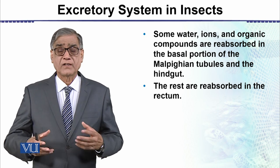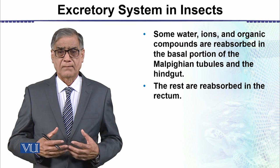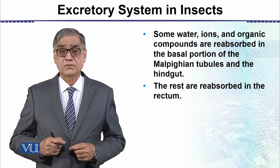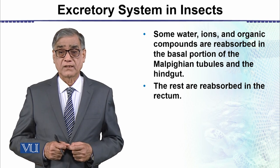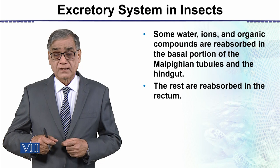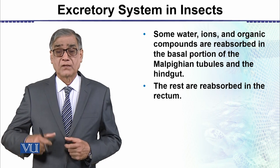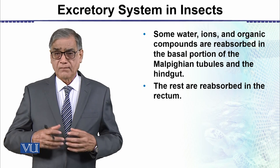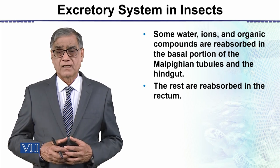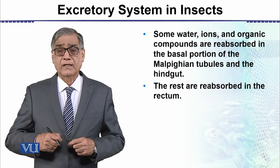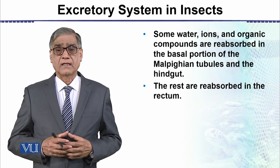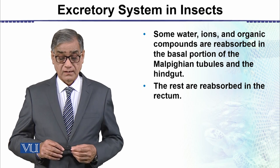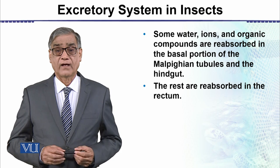The remaining material becomes fecal matter, which stays in the gut and then moves down through the intestine into the rectum. From there, because nitrogenous waste is also present, the fecal matter and nitrogenous waste are removed from the body through the anal opening. This is the excretory system of insects.